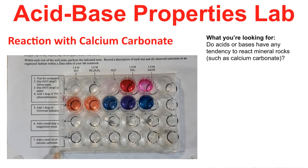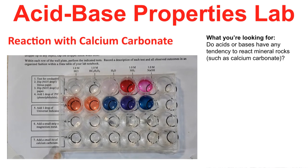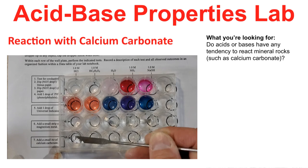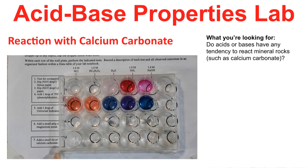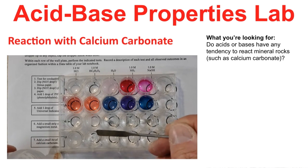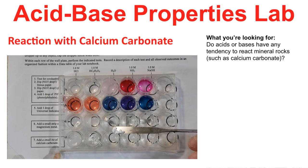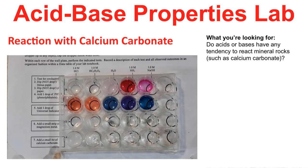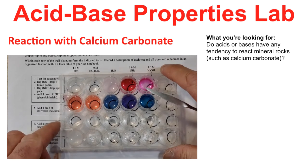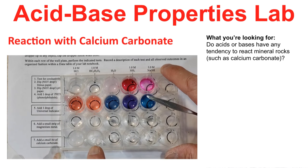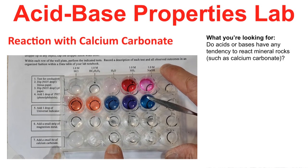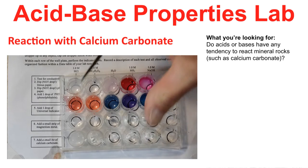Calcium carbonate is a primary constituent of limestone rock, often mined and used in building materials such as marble statues. Limestone also forms the foundation of many lakes and riverbeds. We're going to see how calcium carbonate reacts with acids and bases. We see a rather vigorous reaction with the strong acid, a milder reaction with the weaker acid, no reaction with water, no reaction with the bases, and no reaction with the strong base. Record your observations — there are two significant wells in which we have a reaction.